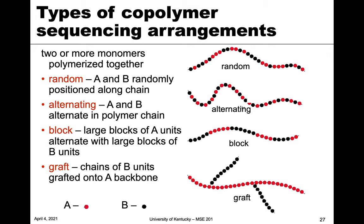There are different ways to arrange copolymers — it's not as simple as just adding two things together. The simplest is random, where two repeat units A and B are randomly positioned along a chain. You can also alternate, in a very controlled A-B-A-B pattern. Another option is block copolymers, where you have small chains of A and B that link together — for example, five A units followed by five B units forming a chain from those blocks.